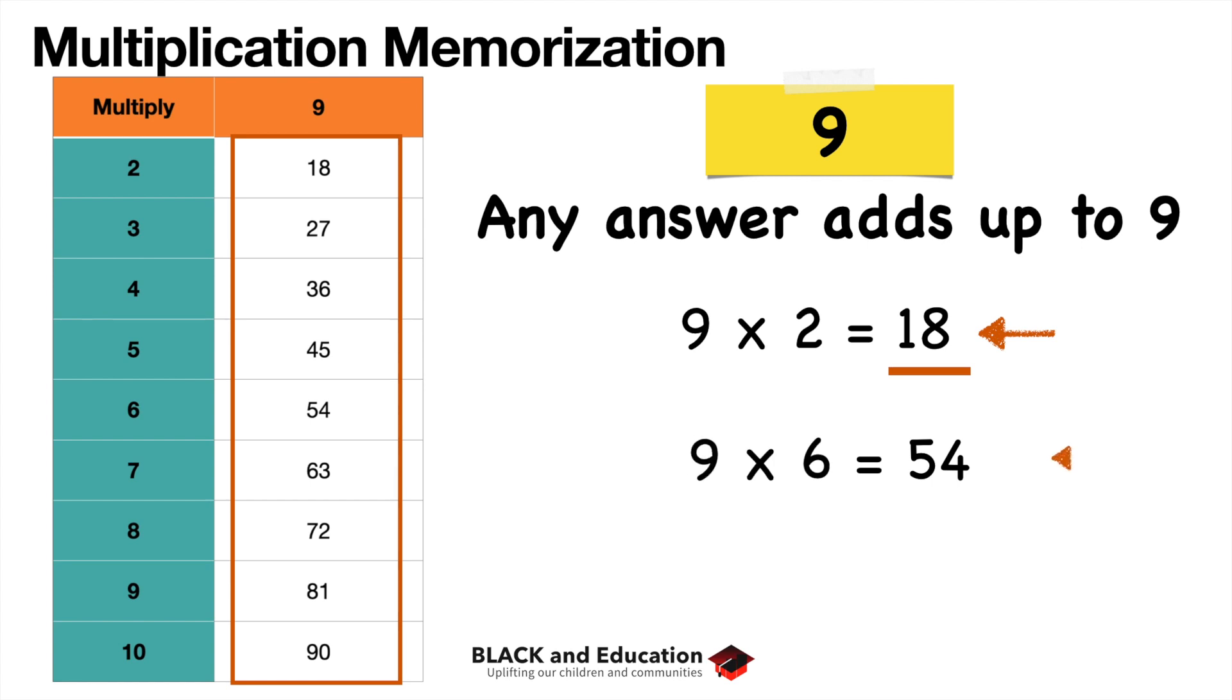So this is a really good trick to look at. Let's say 9 times 6. That's 54. Obviously, 5 and 4 add up to 9. So this works with any number you multiply by 9. The answer is going to add up to 9.